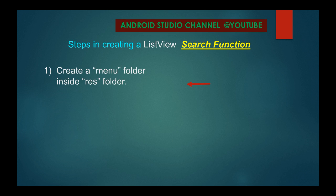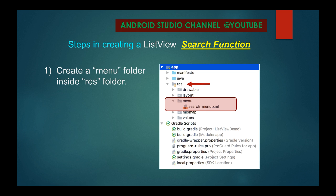So what are the steps in creating a ListView search function? Step one is to create a menu folder inside the res folder of your project explorer for your app. Right-click the res folder, click New, and then create a new directory. Inside the res folder, the default folders are drawable, layout, mipmap, and values — what we should be creating is the menu folder.